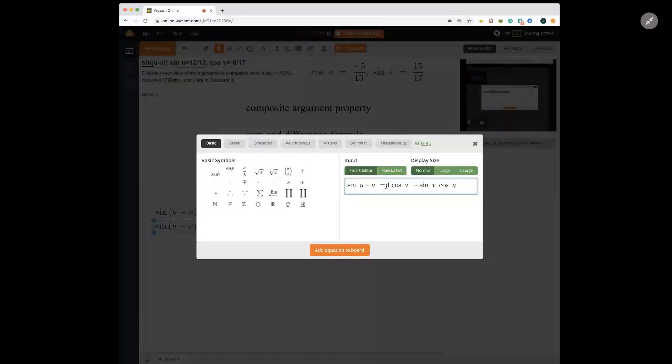And we were also given the cosine of v. The cosine of v was negative 8 over 17.